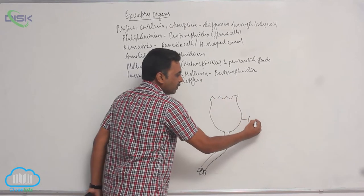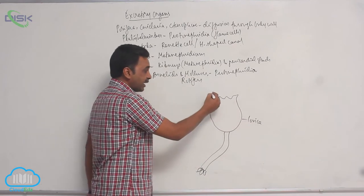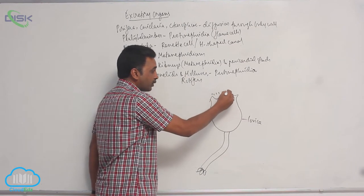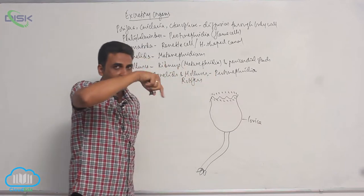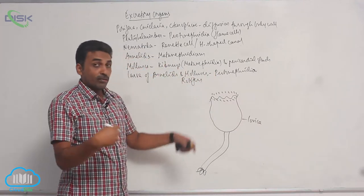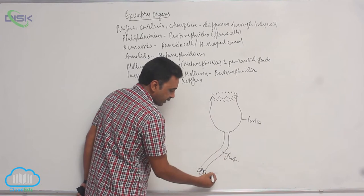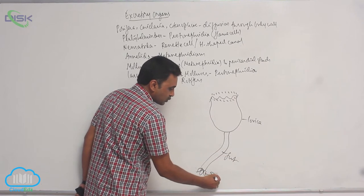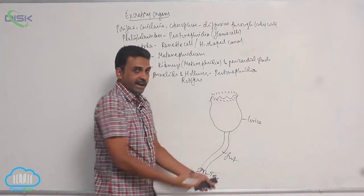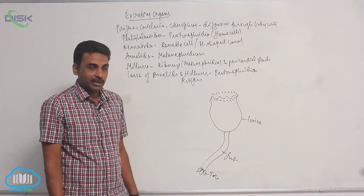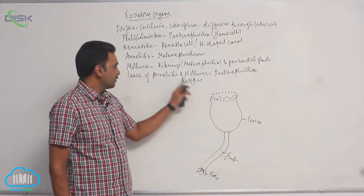This is lorica, where the body proper is present. At the top there are cilia, which move in a circular, wheel-like fashion. That's why they are called wheel animalcules. Here there is a foot, and the foot contains three toes. Often this structure is retracted when you see these animals under a microscope. These smaller animals are also called rotifers.